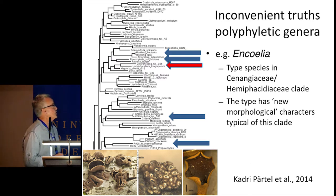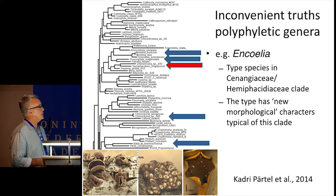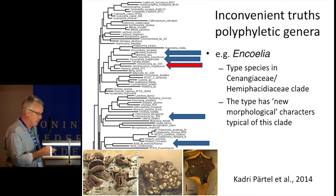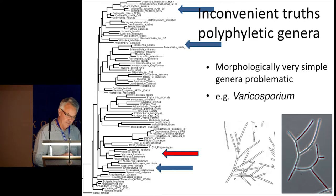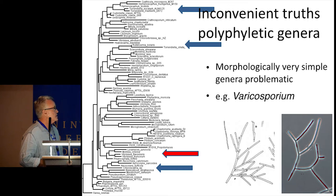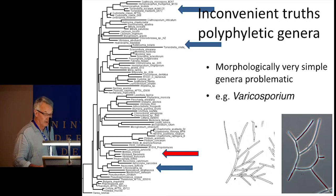Encoelia is another example of a polyphyletic genus — the type species sits in the clade with the Hemiphacidiaceae and has the new morphological characters typical of that clade, which is quite nice. The other species will need to be recombined into other genera. Sometimes it won't be so easy to find new morphological characters — some of these fungi are extremely morphologically simple. An example is one of the aquatic hyphomycetes, whose type species has other species scattered throughout the Leotiomycete phylogeny. Whether morphological characters can be found to distinguish those as distinct genera awaits input from aquatic hyphomycete specialists.